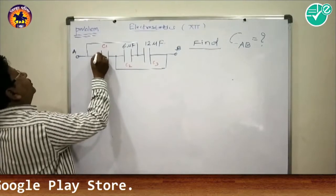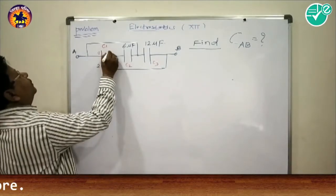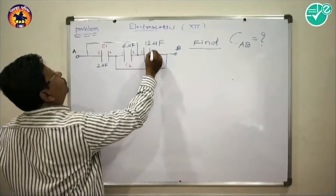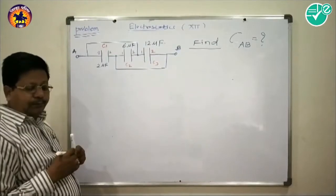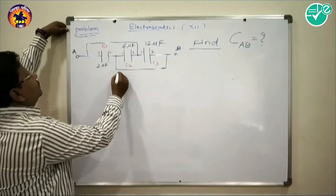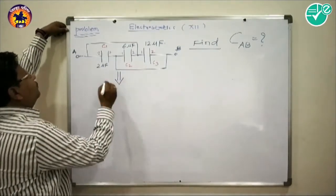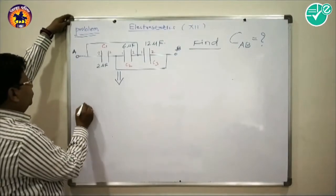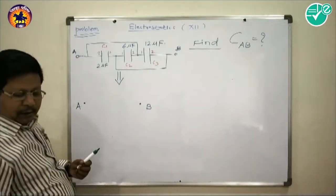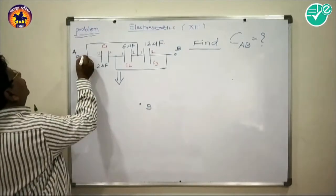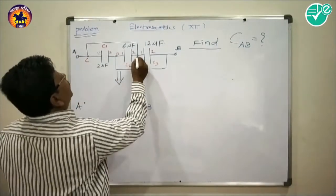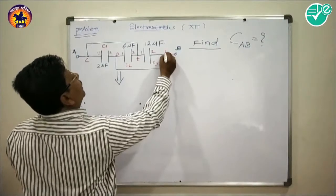We identify the plates of each capacitor and label circuit points. Point A corresponds to point C, and point B corresponds to point F. Additional intermediate points are labeled D and E. The first plate of C1 is at point A, the second plate of C1 connects to point D, and point D connects to point F (which is point B).